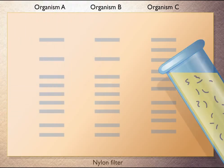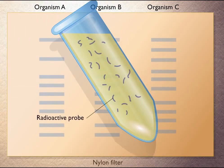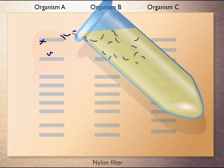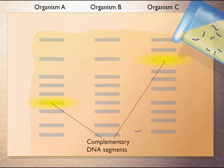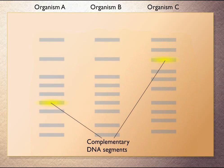Next the radioactively labeled nucleic acid probe is added. The probe binds to complementary DNA segments. Note that the DNA segment being probed is not present in organism B.